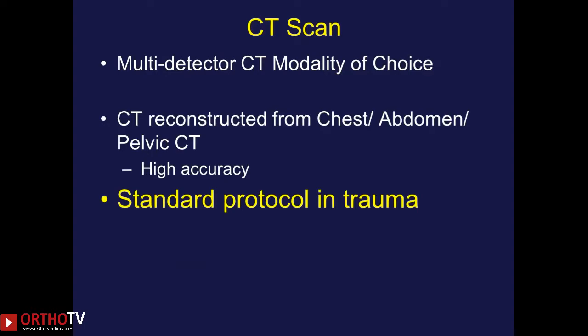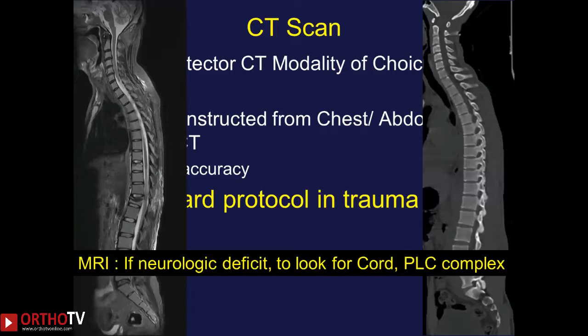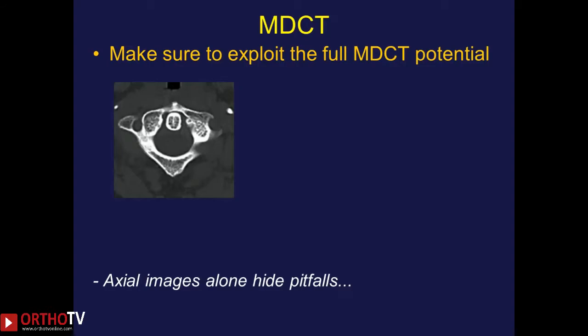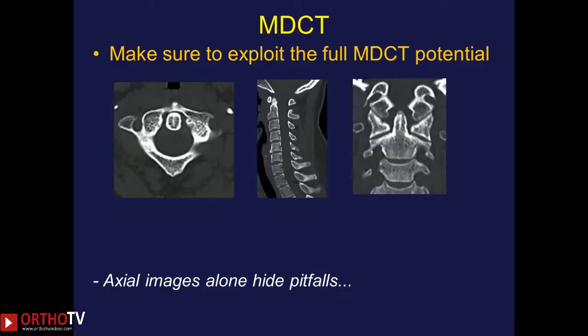The ideal modality for imaging a patient with spine trauma is the multi-detector CT (MDCT), which is the modality of choice. Even CT done for chest, abdominal, and pelvic injuries can be reconstructed to assess the spine, so the patient does not need a separate CT scan of the spinal column. MDCT has become the standard protocol in assessing trauma patients. If any neurological deficit is suspected, further MRI can be done to look for cord injuries and soft tissue injuries. It is best to review all cuts — axial, sagittal, and coronal — to get the best diagnosis.